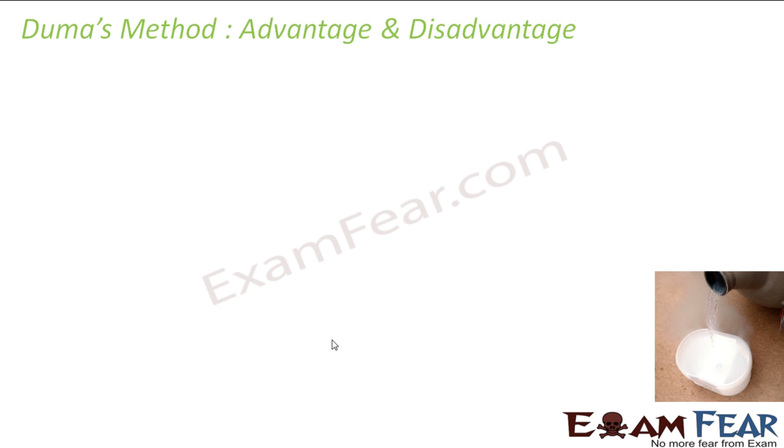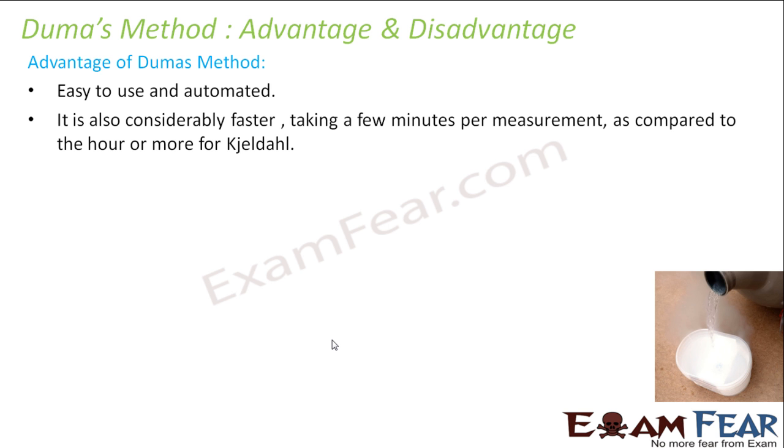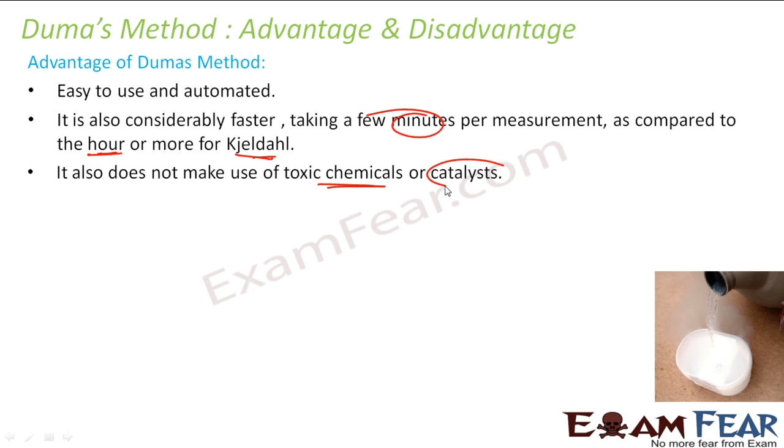There are some advantages and disadvantages for the Dumas method. The advantage is it's easy to use, it's automated, very easy to use. It's very fast. If you consider with the Kjeldahl method, we'll discuss this in the next few slides. It is fast. Because these guys take hours and this happens only in minutes. It doesn't use any toxic chemicals as catalyst. We will discuss that in the Kjeldahl method. You use catalyst, it is toxic.